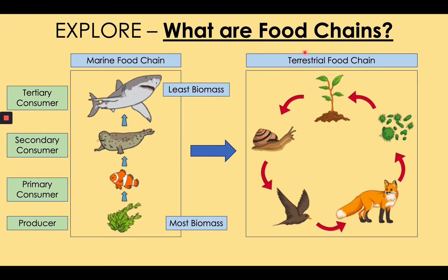This is a terrestrial food chain, which means it's on land, but it could easily be a marine one as well. The producer, the plant, gets eaten by the primary consumer, the snail, which gets eaten by the secondary consumer, the bird, which gets eaten by the tertiary consumer — the apex predator — the fox. But then the fox dies, and its body is decomposed by decomposers like bacteria. The nutrients from the fox's body make it back into the soil and provide nutrients for the producers to grow. And so we have the circle of life. This is a more accurate food chain because it shows how nutrients are constantly being recycled in an ecosystem — they don't just go up and up.